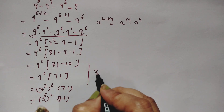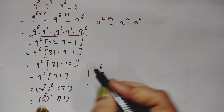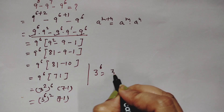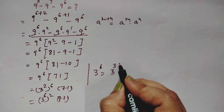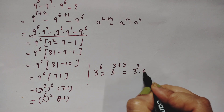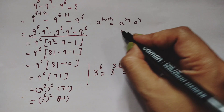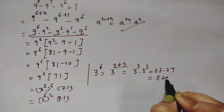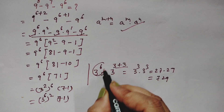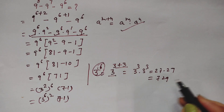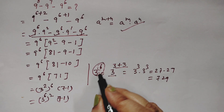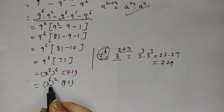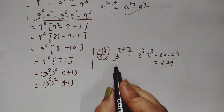Now we need to compute 3^12. We can write this as 3^6 times 3^6. To find 3^6, we split it as 3^3 times 3^3. Since 3^3 is 27, we get 27 times 27, which equals 729. So 3^6 is 729.